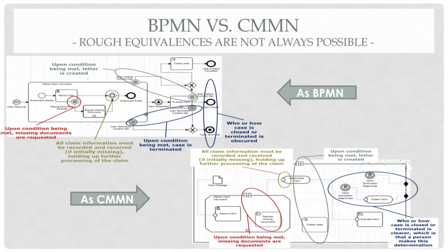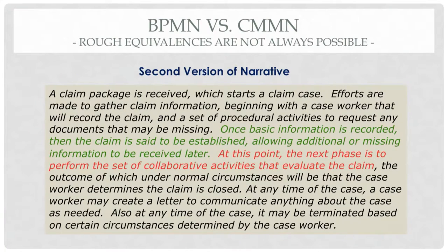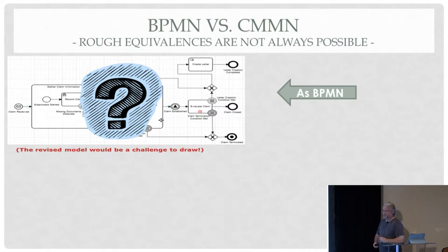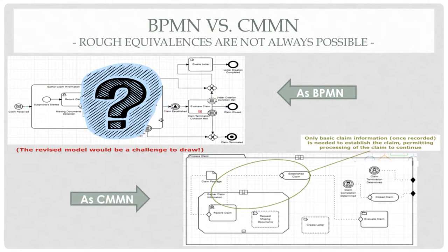In CMMN, you have essentially all the same aspects of this situation accounted for, but it's a much cleaner representation — primarily because there's no worry about flow; there's only dependencies, state, and events. Now let's change the text just slightly: if we say 'once basic information is recorded, the claim is said to be established, allowing additional or missing information to be added later' — quite frankly I don't know what that would look like in BPMN. In CMMN, all I had to do was draw one line differently — one connector from one end to another — and that was enough to capture the semantics of the behavior I'm trying to describe.